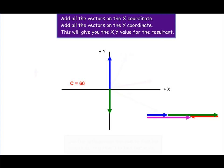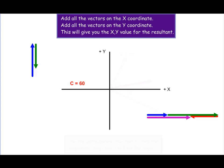Now let's add up all the vectors acting in the y direction. We take the y component of vector A. The y component of vector B is negative, so that has to be subtracted. The sum of these two vectors is this little vector here as shown.